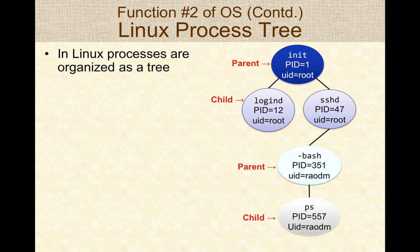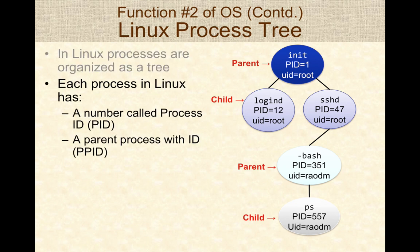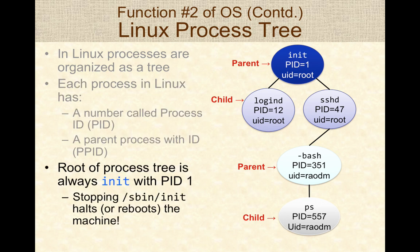In Linux, running processes are organized in the form of a tree. Each process has a parent process ID called PPID, and each process has its own process ID called PID. For example, SSHD has a PID of 47 and its parent process is init with PID equal to 1. In Linux, the root of the process tree is always the init process, which is synonymous with the operating system's kernel — it's the first program run and always has PID 1. The computer stops or reboots by stopping /sbin/init, which kills all child processes, halting or rebooting the machine.